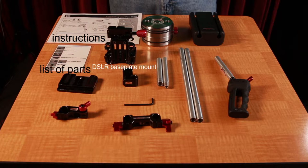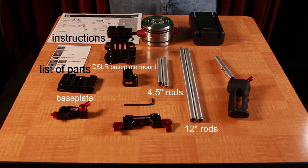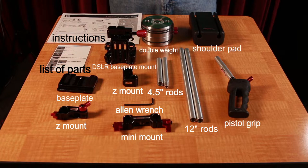Which are the DSLR base plate mount, the base plate itself, two 4.5 inch rods, two 12 inch rods, two Z mounts, your allen wrench, mini mount, pistol grip, double weight, and shoulder pad.